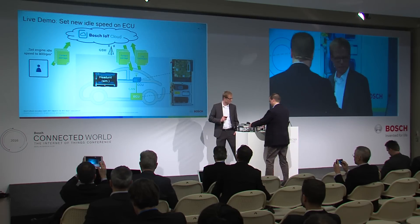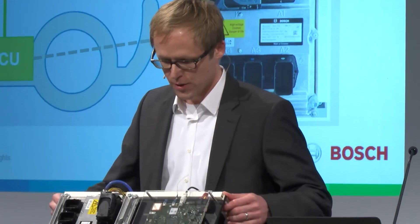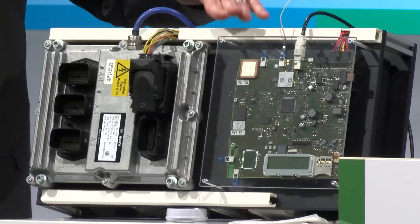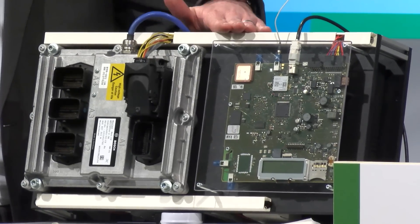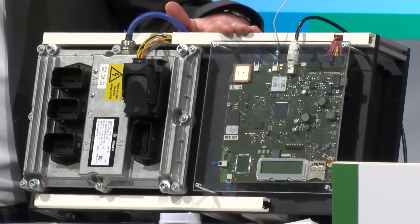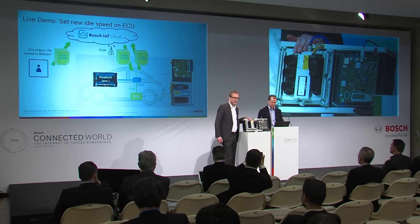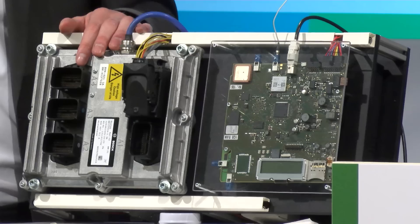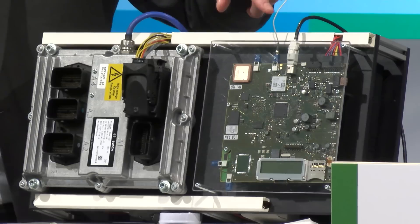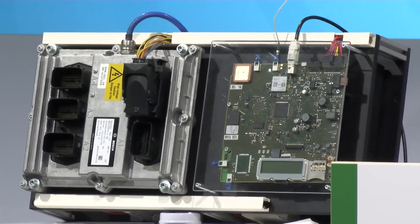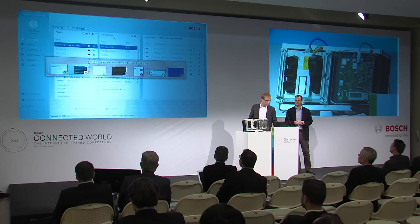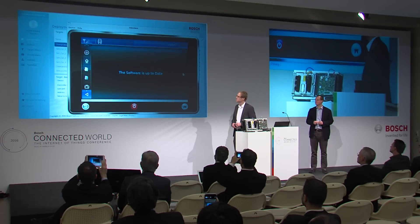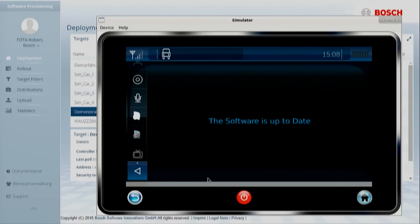We've now reached the live demo. Before we begin, let me briefly explain the setup. We have a real CCU — a CCU sample board from CM. This connects via CAN to the ECU, which is an MDG1 engine controller. There is a true CAN connection, and this connects via GSM to the cloud. We also have a head unit here, which is simulated so you can see what the driver would see in the vehicle. Currently the software is up to date.